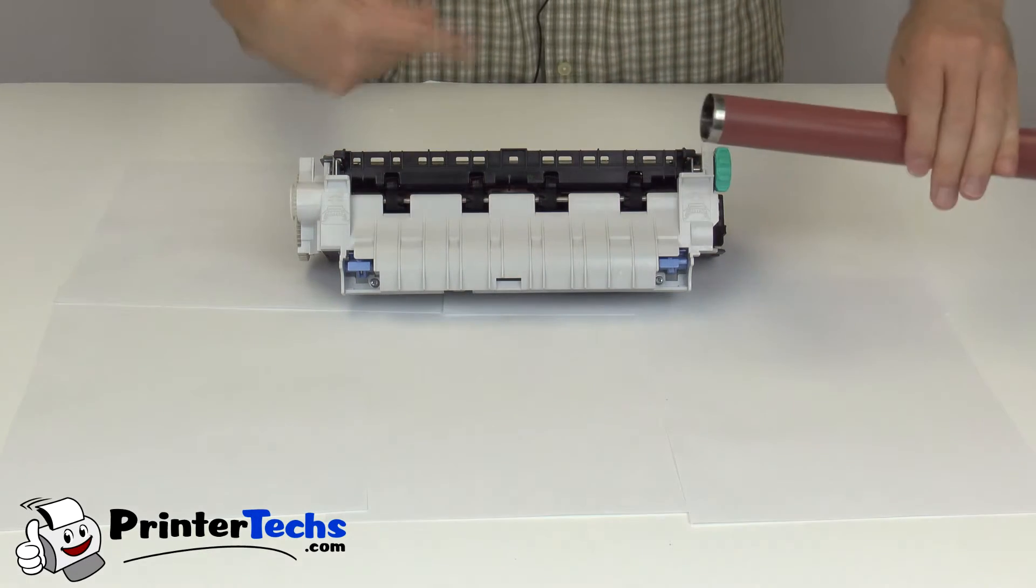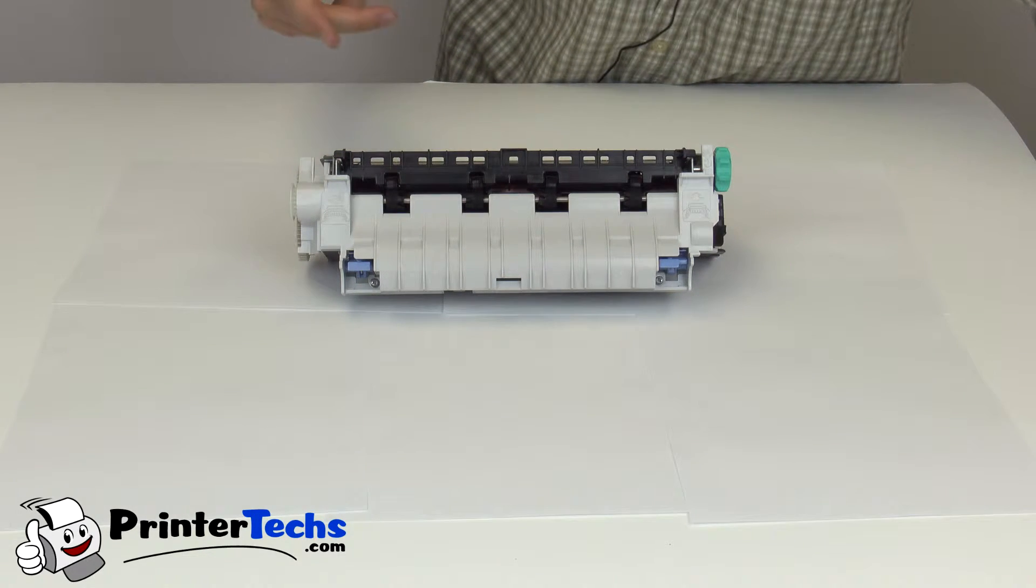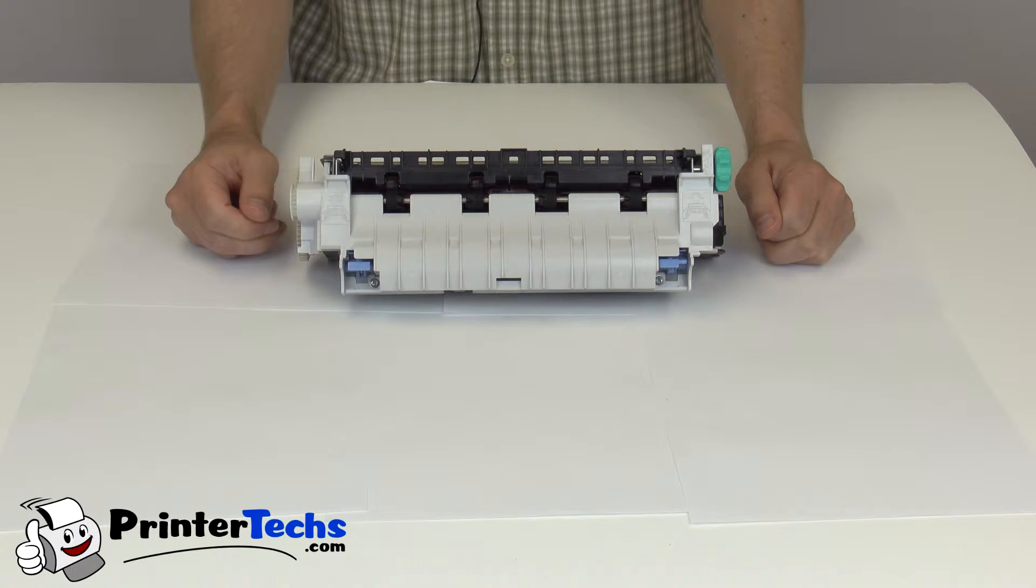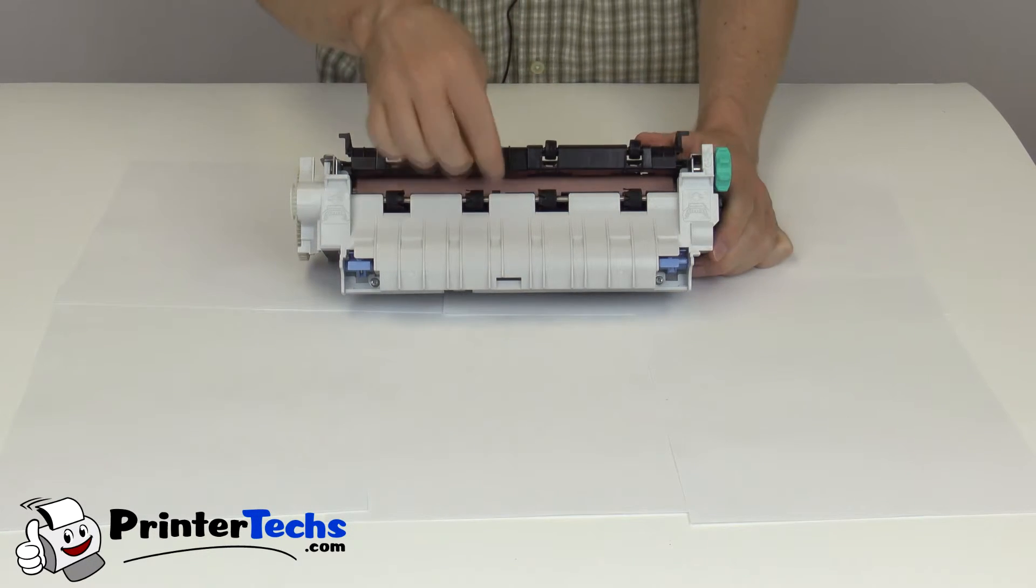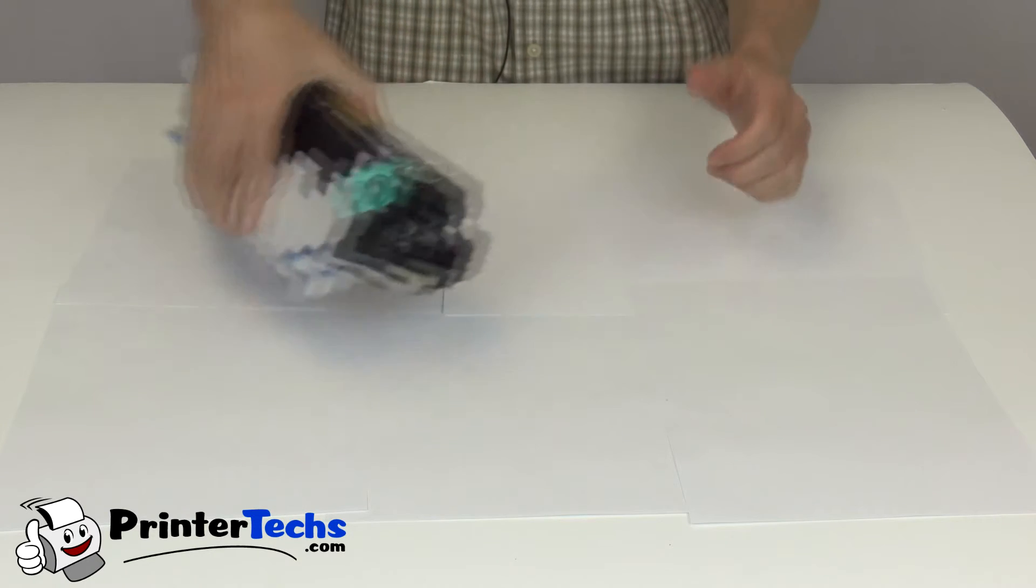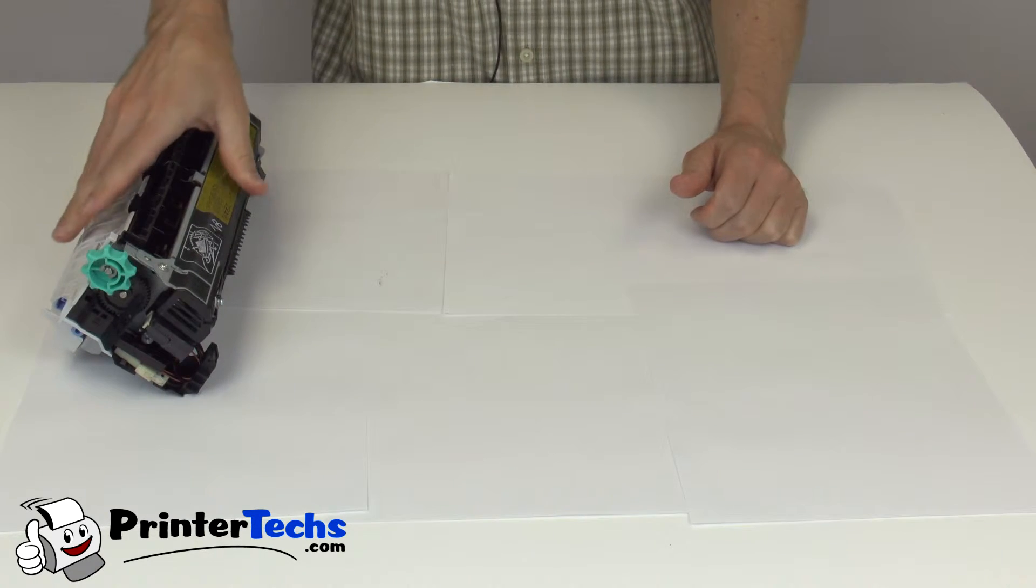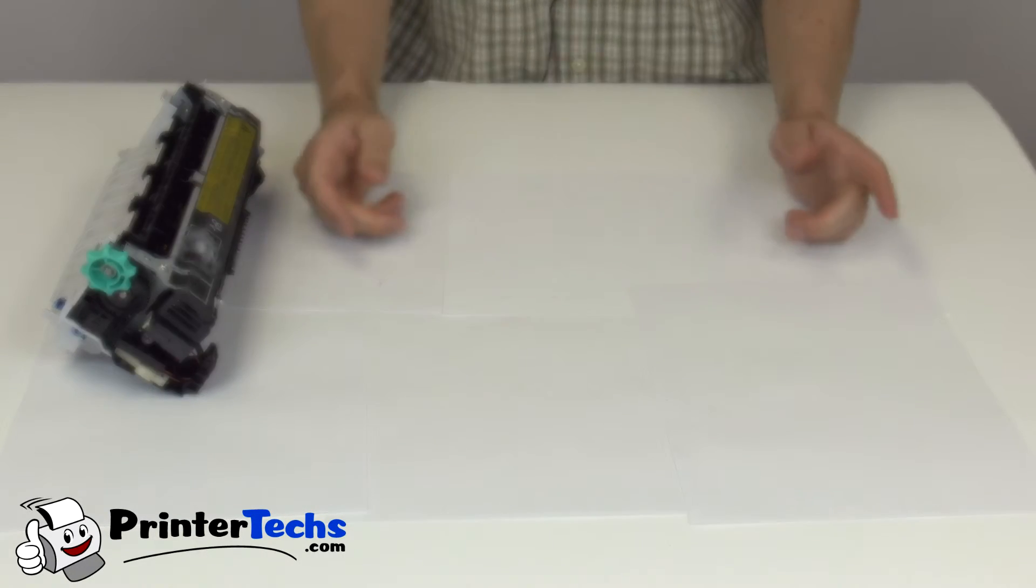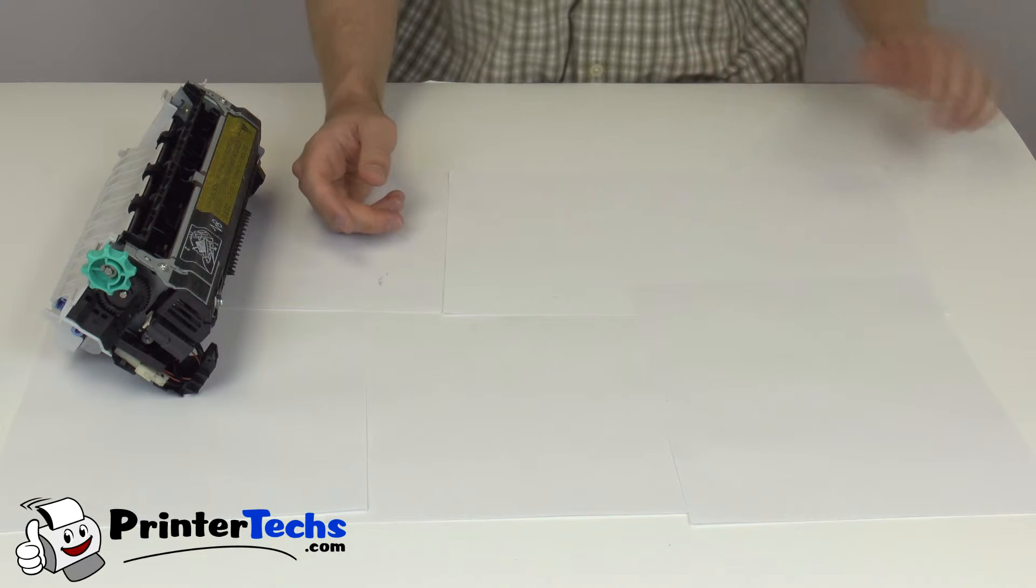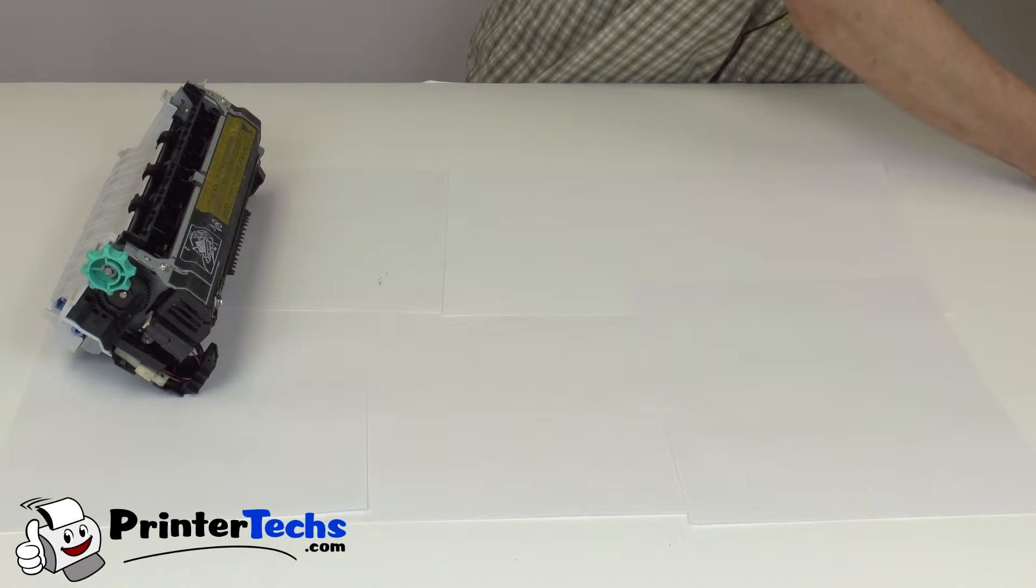It rotates around a heating element, and the heating element helps to bond toner to the paper. So you need a sleeve with a really durable coating, and you want to make sure that sleeve works well with labels, envelopes, and heavier media.